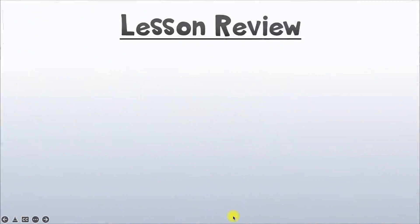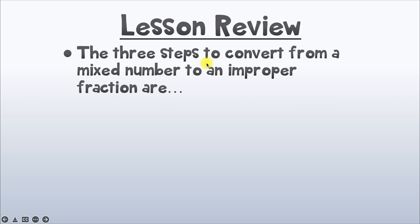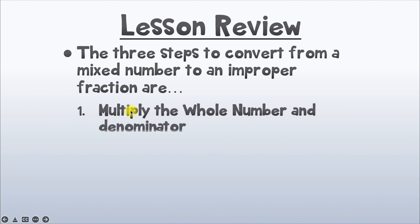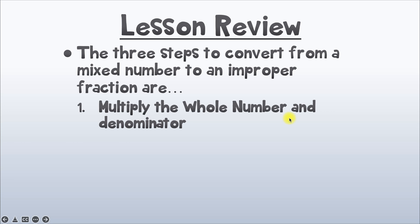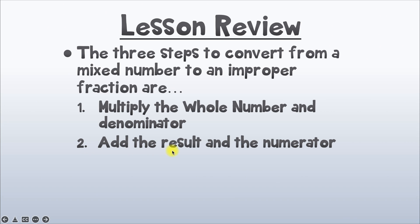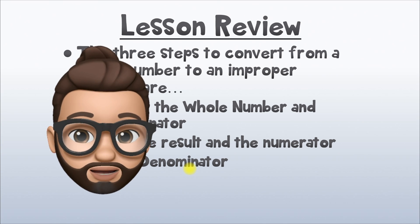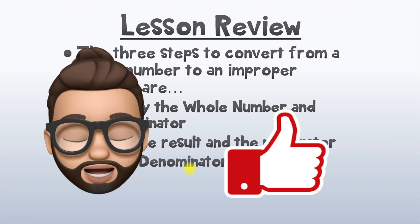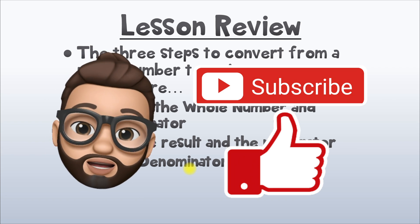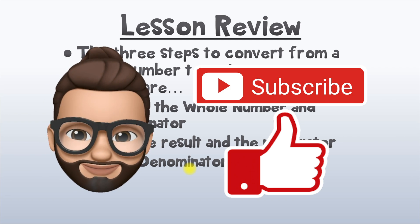Let's wrap everything up with a lesson review. The 3 steps to convert from a mixed number to an improper fraction are: 1 — multiply the whole number and the denominator; 2 — add the result and the numerator; and 3 — keep the denominator. If this video helped you, don't forget to like it and subscribe to our channel so you catch all of our other math videos. Thanks for watching!